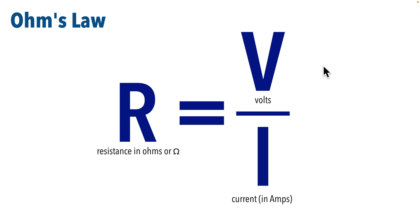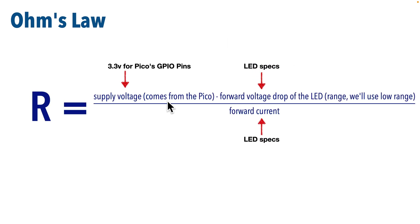Well, the voltage is actually a calculation. What we need to do is take a look at the supply voltage. In our case, that's going to be the power that's coming from the Raspberry Pi Pico. We're eventually going to be connecting our LED to one of the digital pins on our Pico. And all the digital pins in the Pico provide 3.3 volts.